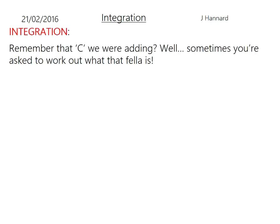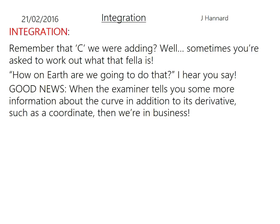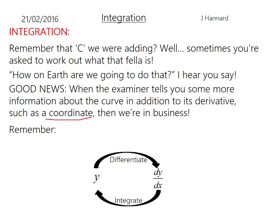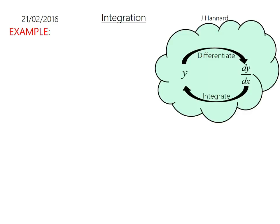Let's do an example. Remember that c that we were adding? Well, sometimes you have to work out what that fella is. How on earth are we going to do that? Well, good news: when the examiner tells you some more information about the curve in addition to its derivative, such as a coordinate for example, then we're in business. Remember that when you differentiate y, you get dy/dx. And when you integrate dy/dx, you get y again. So the curve f(x) goes through the point (2, 8). f'(x) equals 6x squared minus 6x. So find f(x), the original function, i.e. the y part.